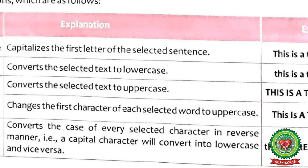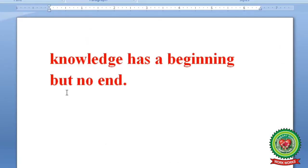The fifth case is Toggle Case, which converts the case of every selected character in reverse — a capital character will convert to lowercase and vice versa. It is the opposite of Capitalize Each Word: the first letter of every word is small and the rest are capital. Now let's do the practical by opening the MS Word window.